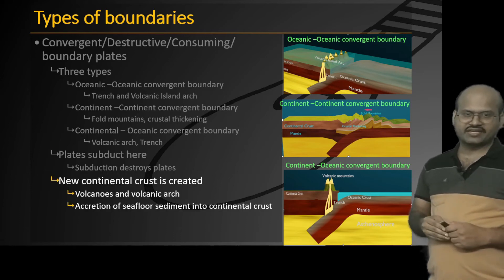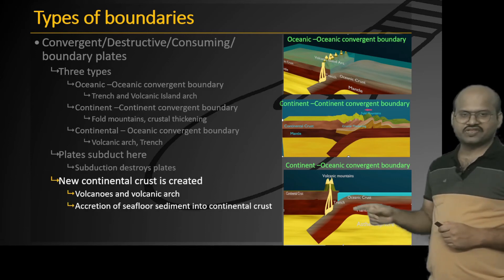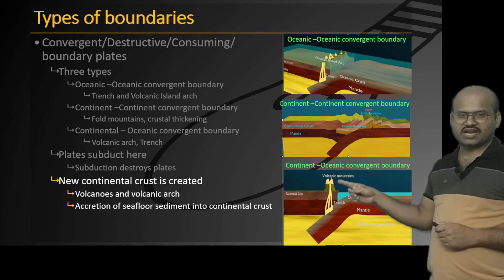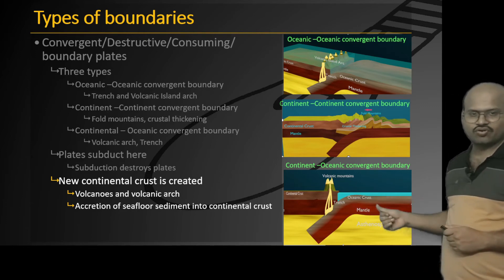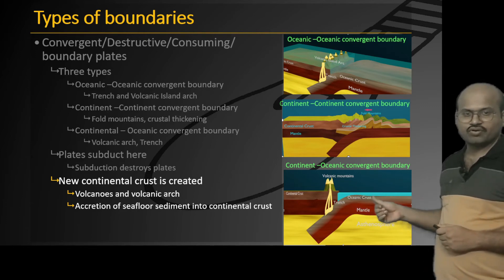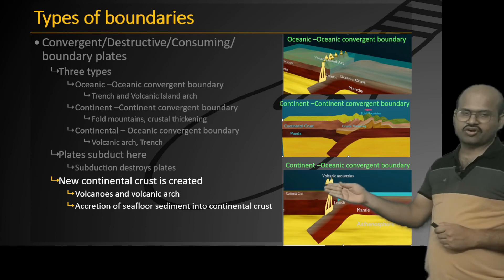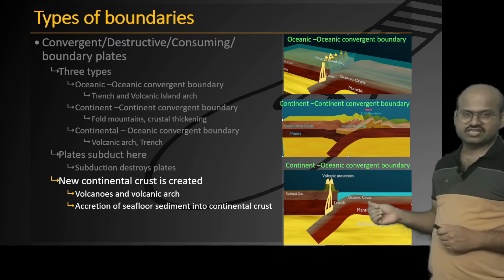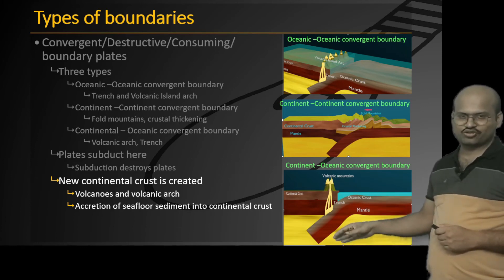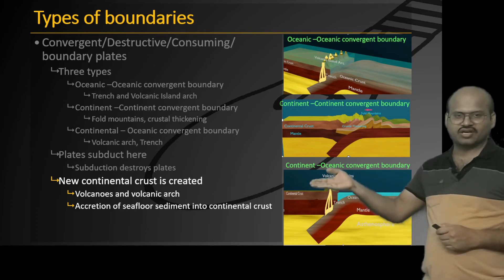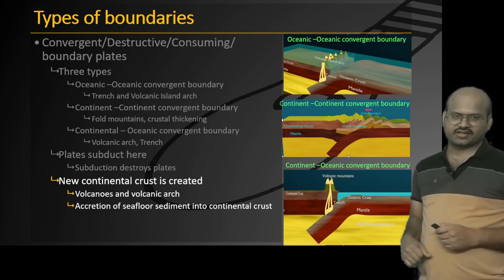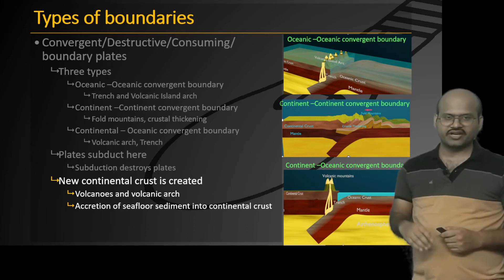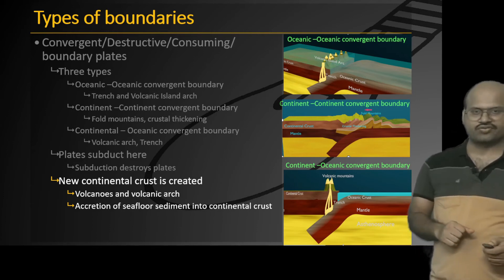At convergent boundaries, volcanic activities add material to the continental crust. Moreover, sediments over the oceanic floor are also added to the continental crust because these sediments are less dense than the asthenosphere or mantle and therefore do not subduct. As a result, continental crust is created at convergent boundaries.